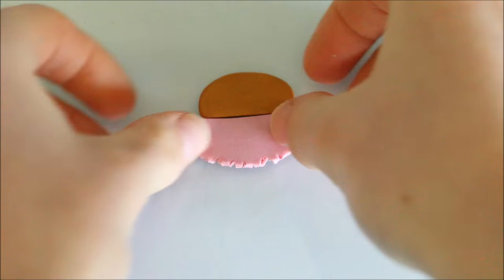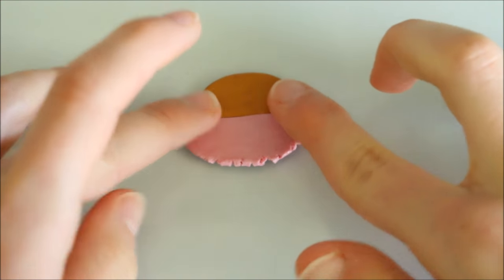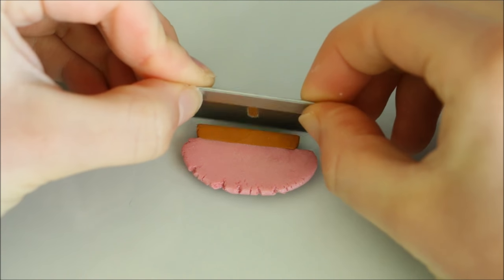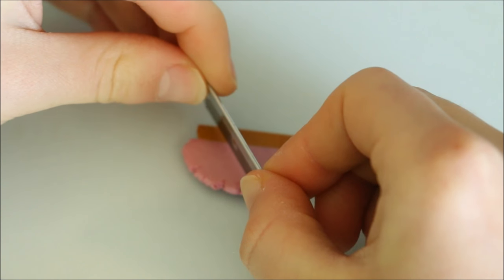Polymer clay is a fairly strong material so if the colors are stuck together properly they shouldn't break apart. But if you want to be extra safe you can also use some liquid clay to help secure them.